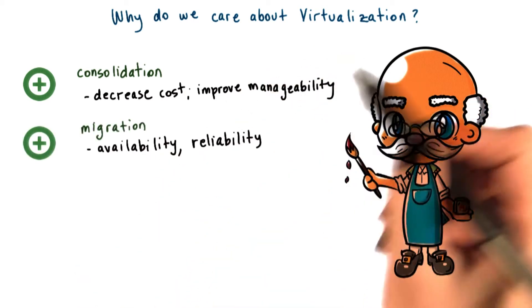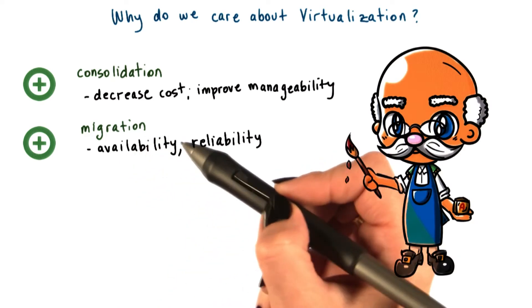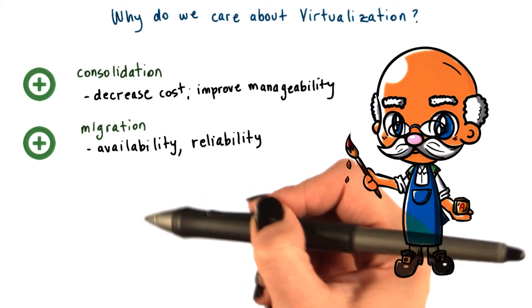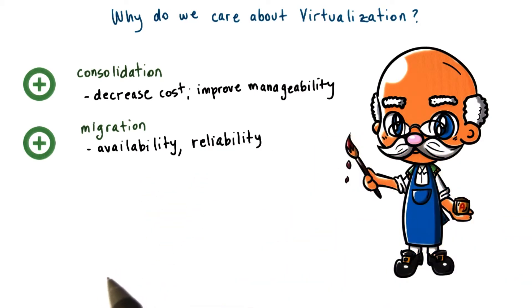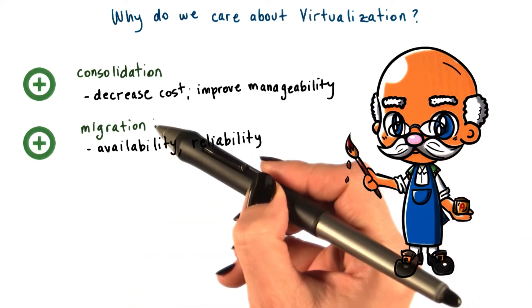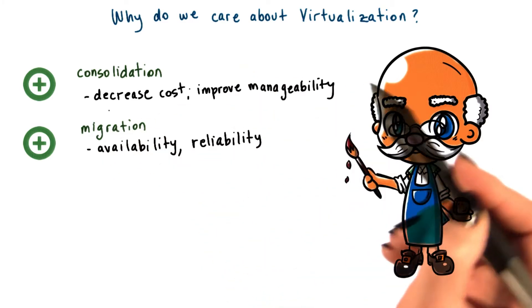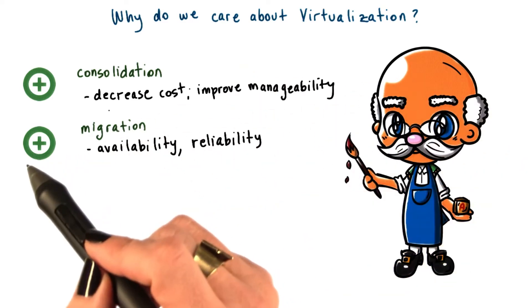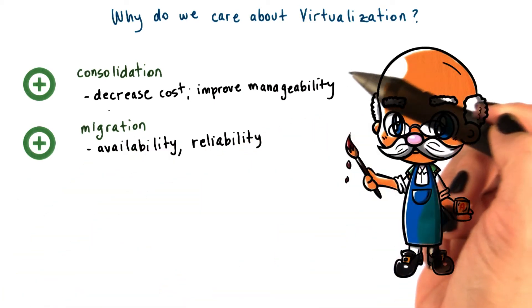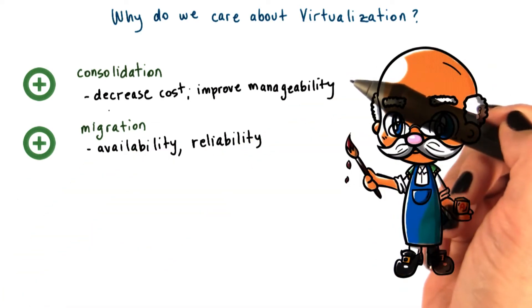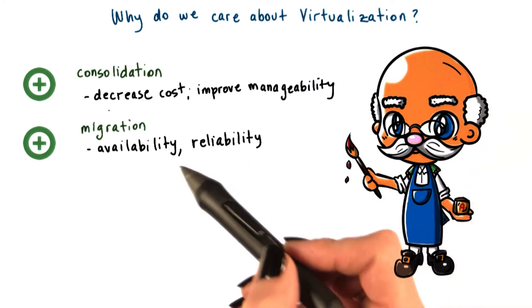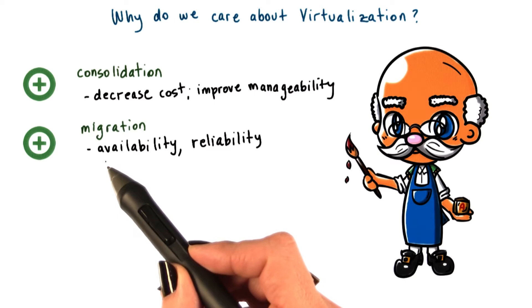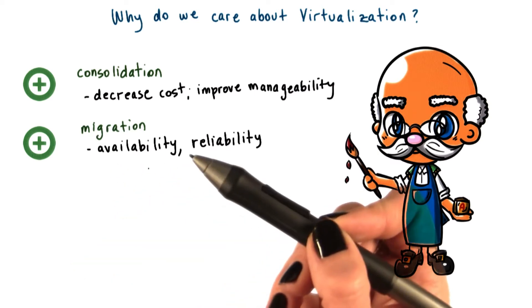In addition, with virtualization, once the operating system and its applications are nicely encapsulated in a VM and decoupled from the actual physical hardware, it becomes more easy to migrate the OS and the applications from one physical machine to another, or even to copy and clone them onto multiple physical machines at the same time. As a result, virtualization leads to mechanisms that are useful in order to provide greater availability of the services.